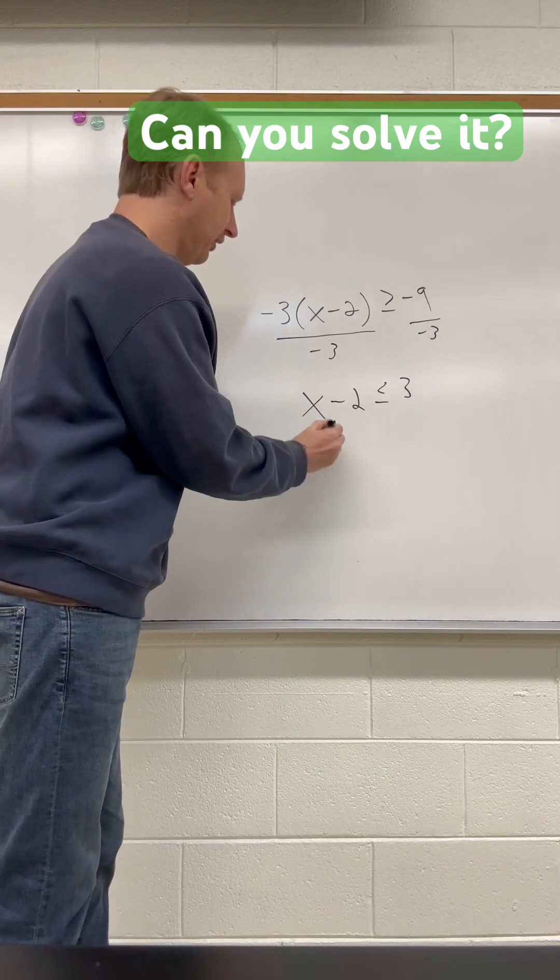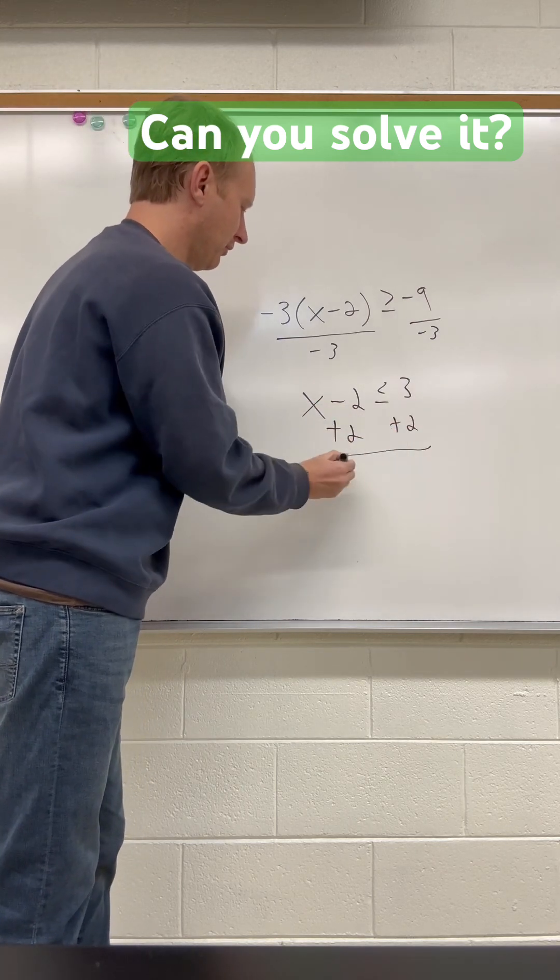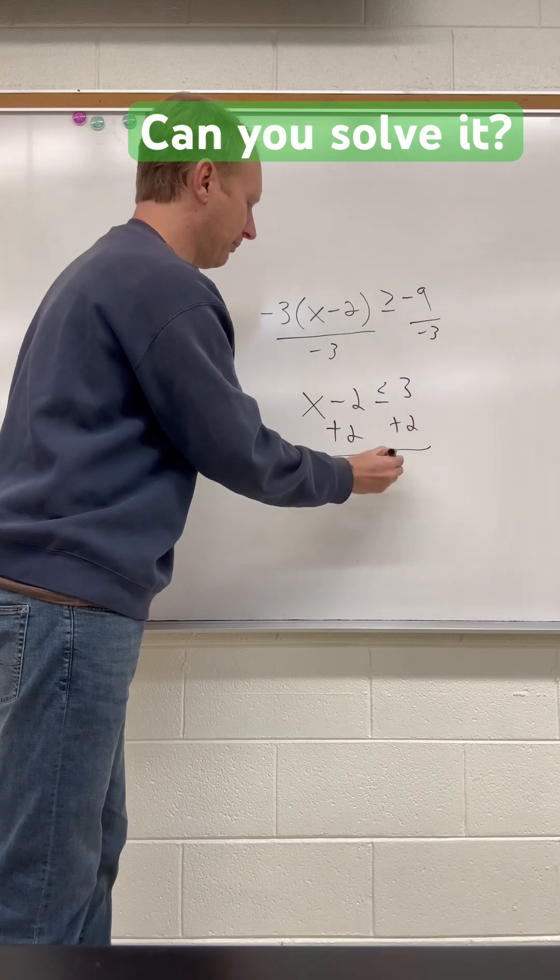Then let's add 2 to both sides. We get x less than or equal to 5. 3 plus 2 is 5.